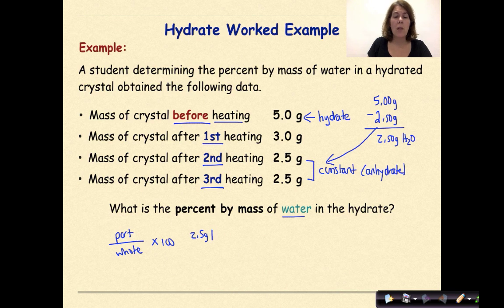So 2.5 grams of water over the total mass of the hydrate, which is 5 grams, times 100. So 2.5 divided by 5 times 100 is going to be 50 percent. So 50 percent of the mass of the crystal before heating was water.